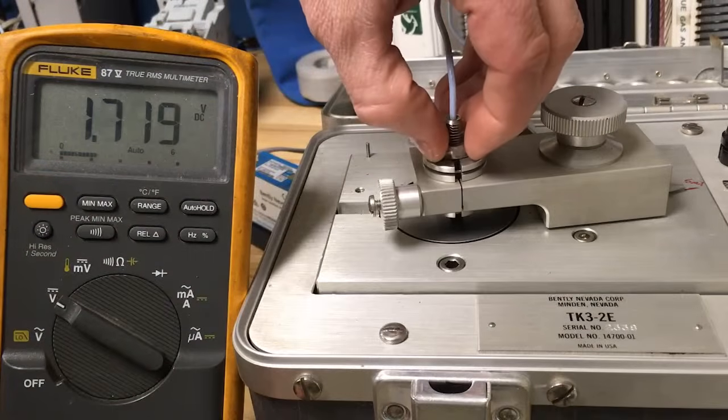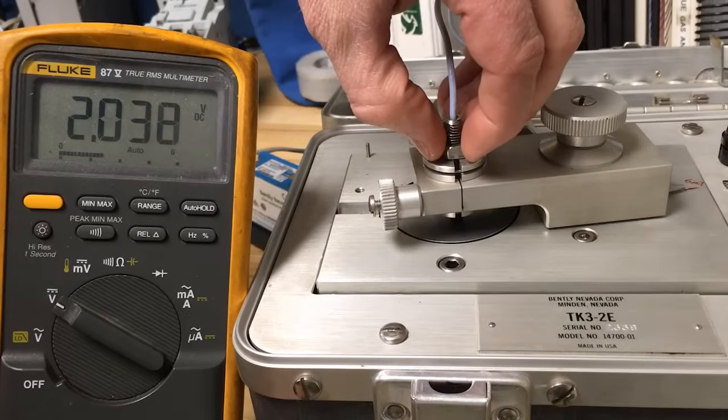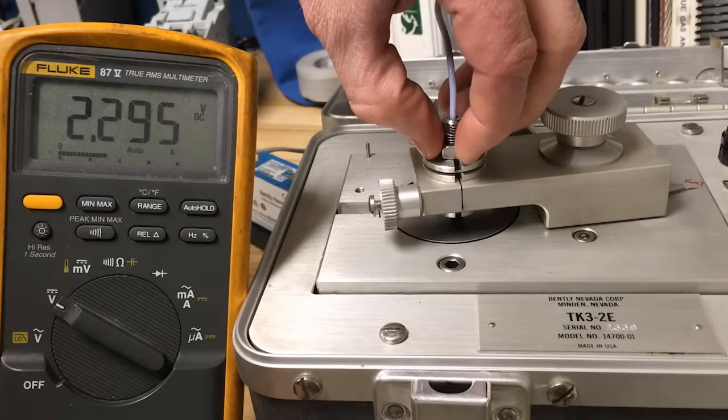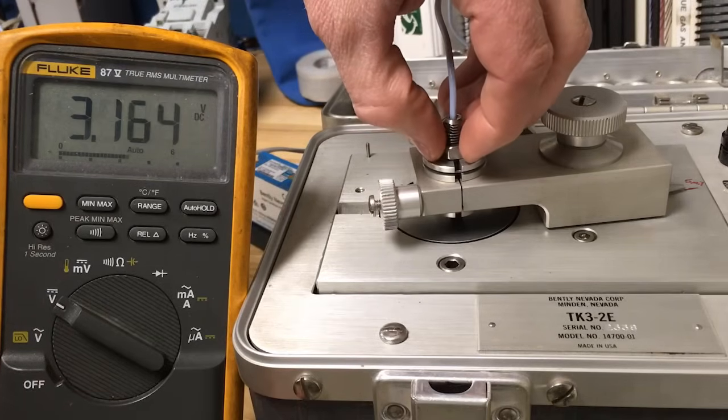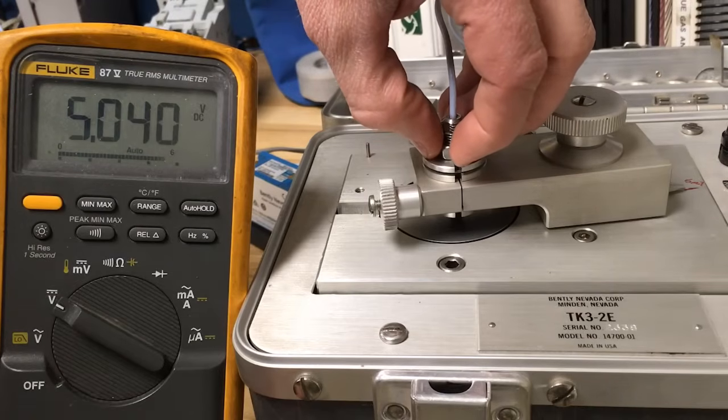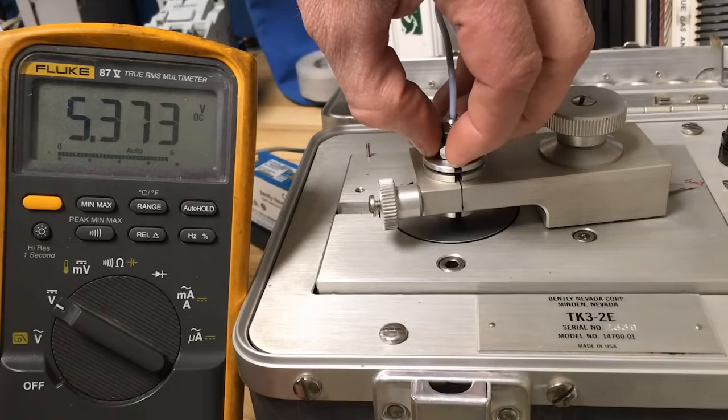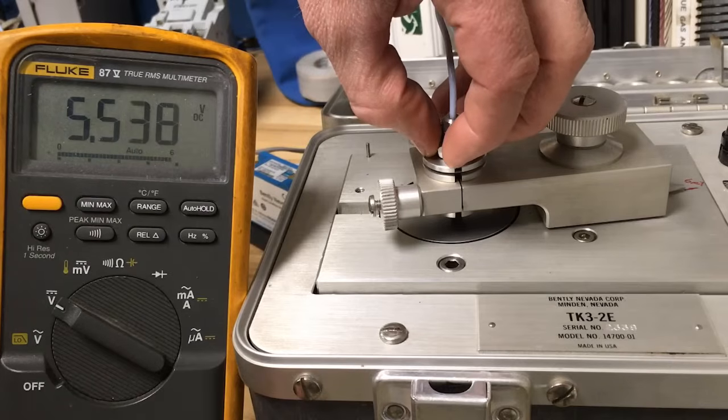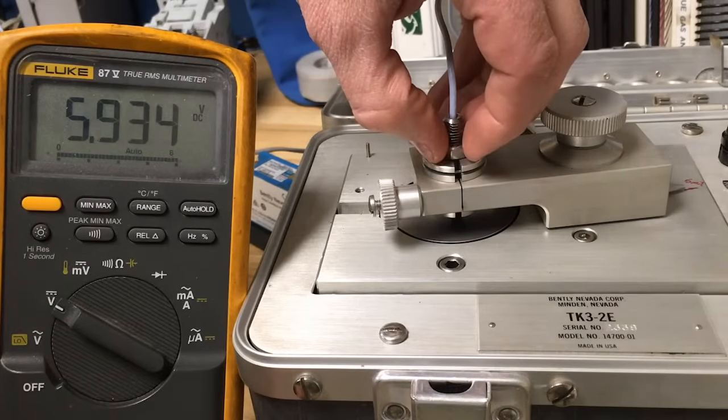Secure the probe in place with the finger screw of the swing arm. Monitor the voltmeter while you use the jam nut to pull the tip of the probe away from the surface of the disc. Continue pulling the probe away from the surface until the previously calculated gap voltage value is measured on the multimeter. In this case, it will be approximately 6.5 volts.